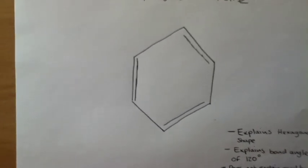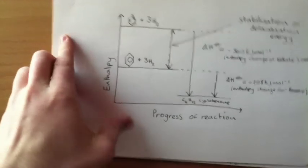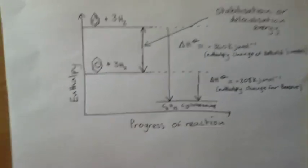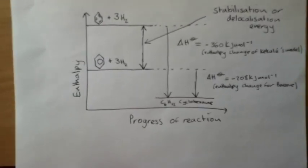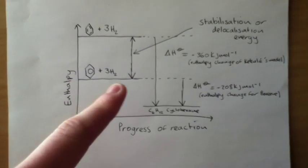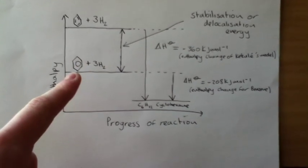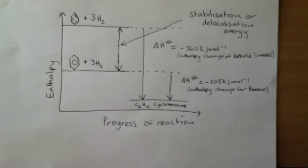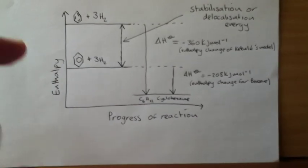I've also got an enthalpy level diagram here. This shows the enthalpy changes between the modern benzene representation and Kekule's structure. And basically what we can tell from this enthalpy diagram is that the stabilisation energy between Kekule's structure and benzene shows us that the molecule of benzene is very stable. And this is backed up by looking at reactions between arenes, because of how stable the molecule is.